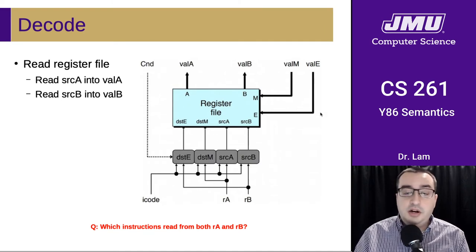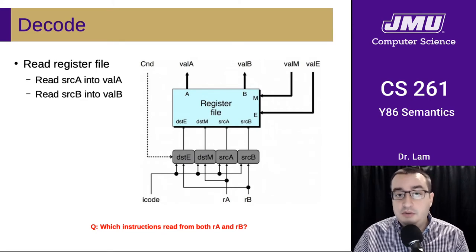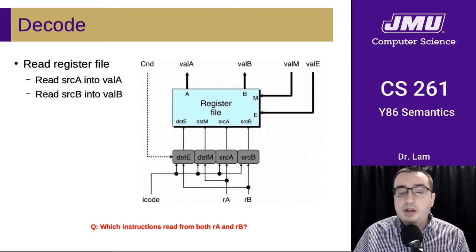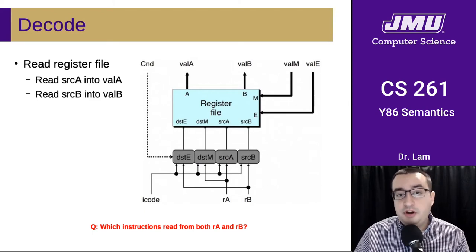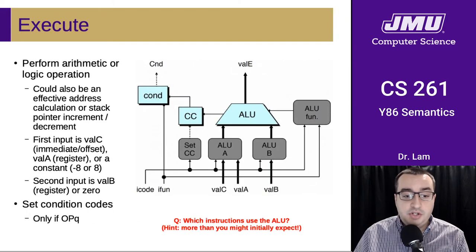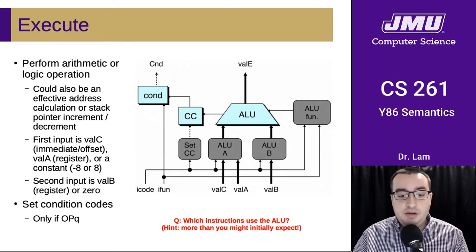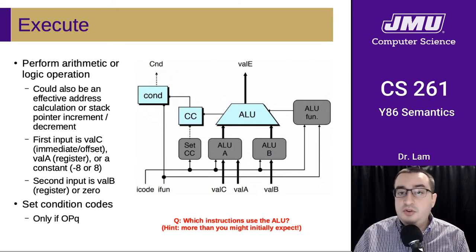The values of those registers come out via the ValA and ValB signals. There's some other stuff going on here, but that has to do with writing to registers, which happens during a later phase. So now we have some register values potentially, which along with other information from the fetch phase gets fed into the execute phase.